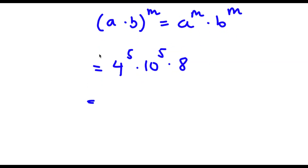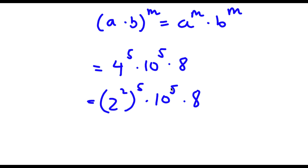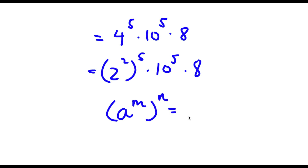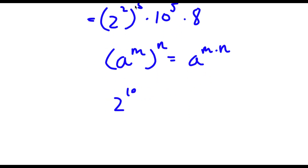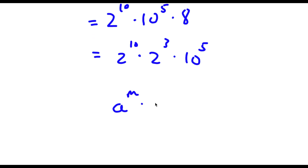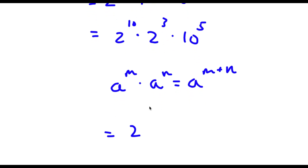Now 4 is the same thing as 2 squared, so I replace 4 to the power of 5 with (2 squared) to the power of 5. Using the power rule, that's 2 to the power of 10, since 2 times 5 is 10. I also have times 10 to the power of 5 times 8. And 8 is the same thing as 2 to the power of 3. So now I have 2 to the power of 10 times 2 to the power of 3 times 10 to the power of 5. Using the rule a^m × a^n = a^(m+n), 2 to the power of 10 times 2 to the power of 3 equals 2 to the power of 13.